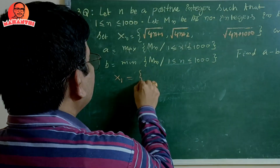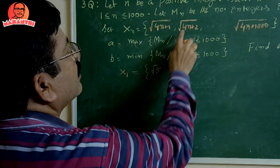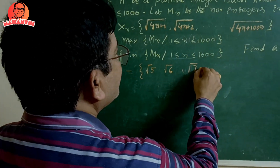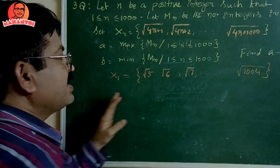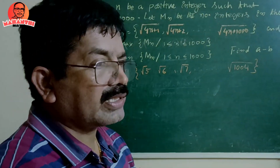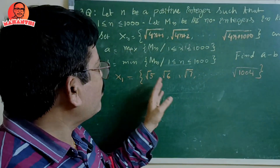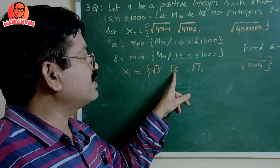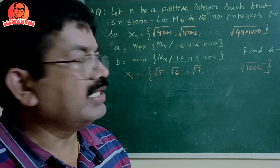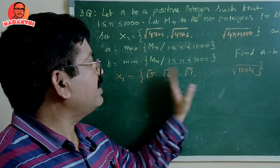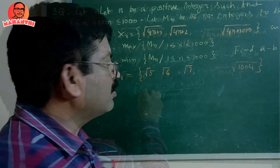X1 equals {√5, √6, √7, ...} — 4×1+1=5, 4×1+2=6, and so on up to √1004, giving 1000 elements. Out of these, not all are integers. Only square roots of perfect squares are integers. So we need to find the number of perfect squares between 5 and 1004.